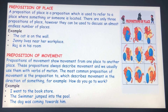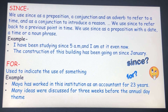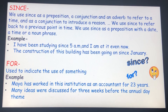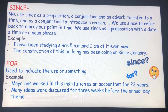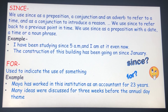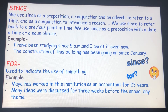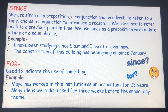Since and for. Since — it refers to a particular point of time. Example: I have been studying since 5 a.m. and I am at it even now. 'Since' specifies from a particular time in the past until a later time. The construction of this building has been going on since January. Here, 'since' is used to refer back to a previous point.